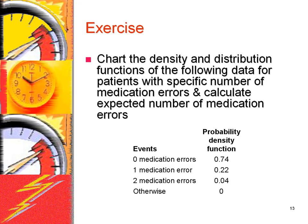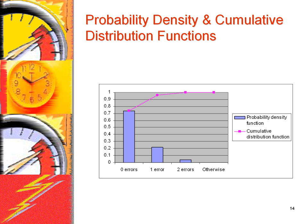Chart the density and distribution functions of the following data for patients with a specific number of medication errors, and calculate the expected number of medication errors. This chart shows the probability density and the cumulative distribution function for the data on medication errors. A cumulative density function shows the probability of events less than or equal to a particular value — it never decreases. The size of the step in the cumulative distribution is the same as the probability of the event; for example, the rise from zero to one medication error is equal to the probability of one medication error.